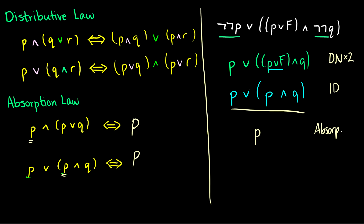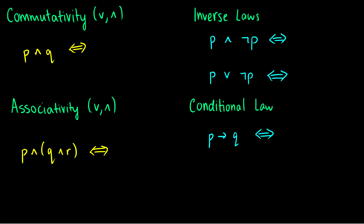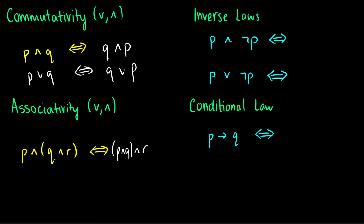We are almost done with these laws. The commutativity law says we can flip the order: P∧Q is logically equivalent to Q∧P, and P∨Q is logically equivalent to Q∨P. Associativity says P∧(Q∧R) is equivalent to (P∧Q)∧R, and the same holds for or. Make sure both connectives are the same; otherwise we're dealing with distributivity instead.